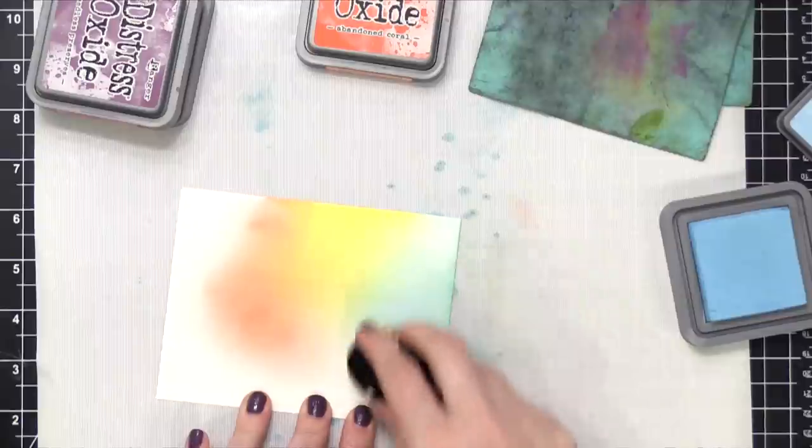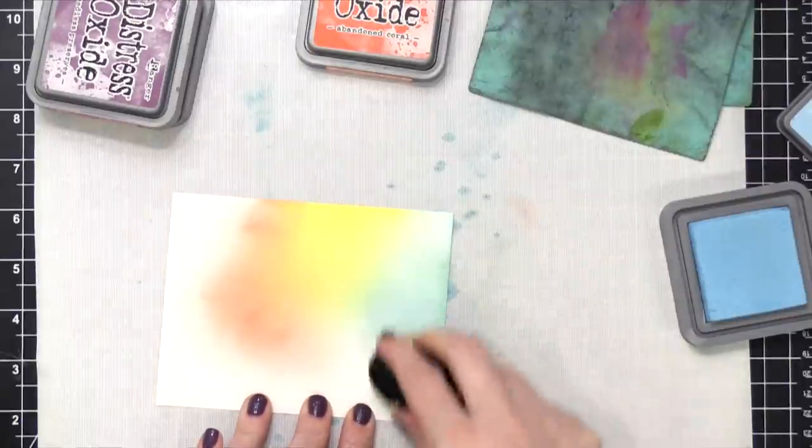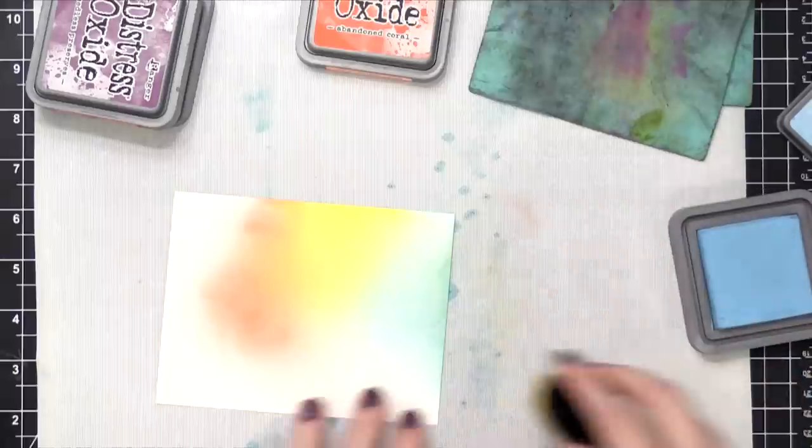So I'm blending on Tumbled Glass, and then I'm gonna switch colors here, and I'm gonna move to Seedless Preserves.